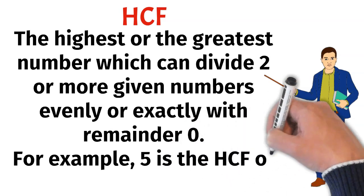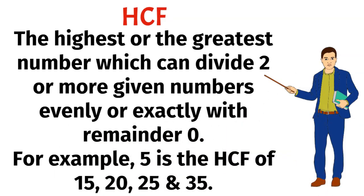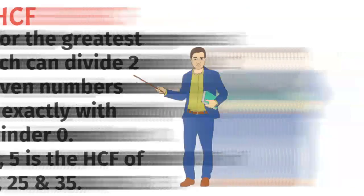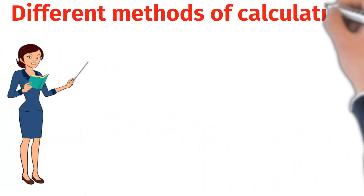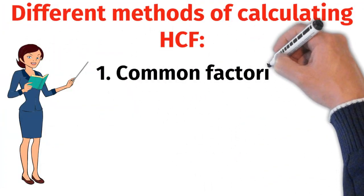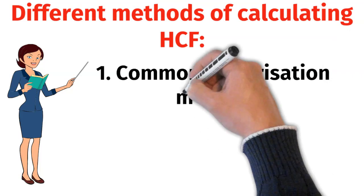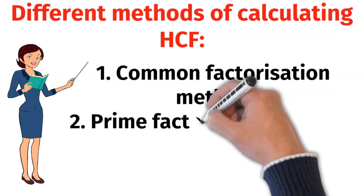For example, 5 is the HCF of 15, 20, 25 and 35. There are different methods of calculating HCF. Let's discuss about them.